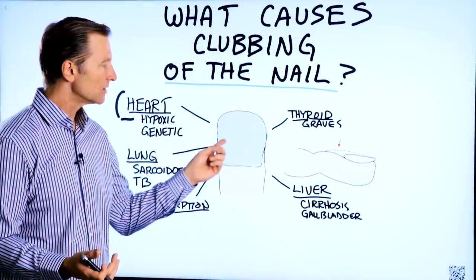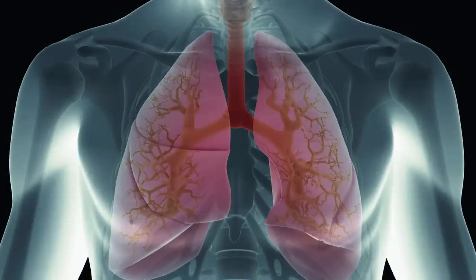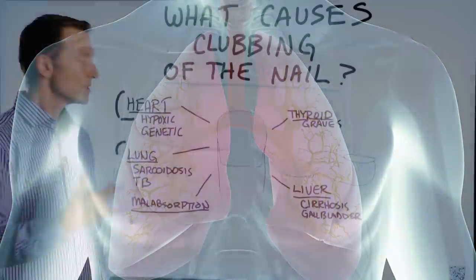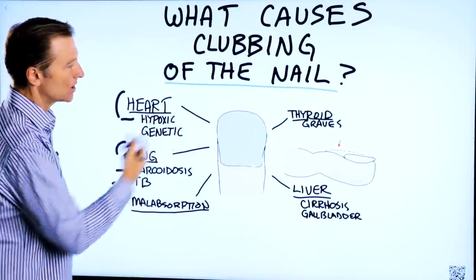Because you're born with that, you're going to develop this appearance early on. Also, the lung. If there's a condition called sarcoidosis or you had TB, that could create this appearance.